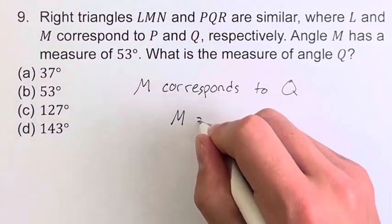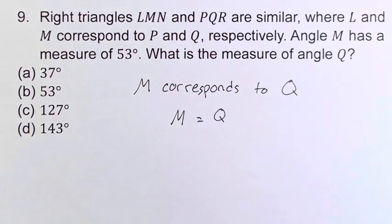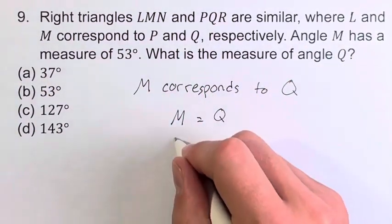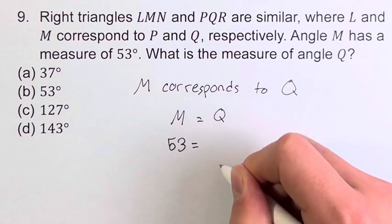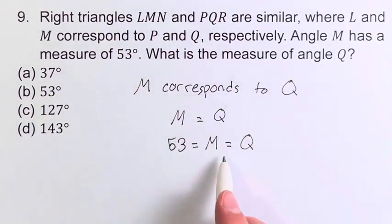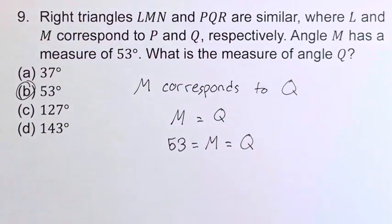So M equals Q. And we're told that angle M has a measure of 53 degrees. So 53 is equal to M, which is of course also equal to Q. Therefore, the measure of angle Q is the same as M, 53 degrees. B is going to be your final answer.